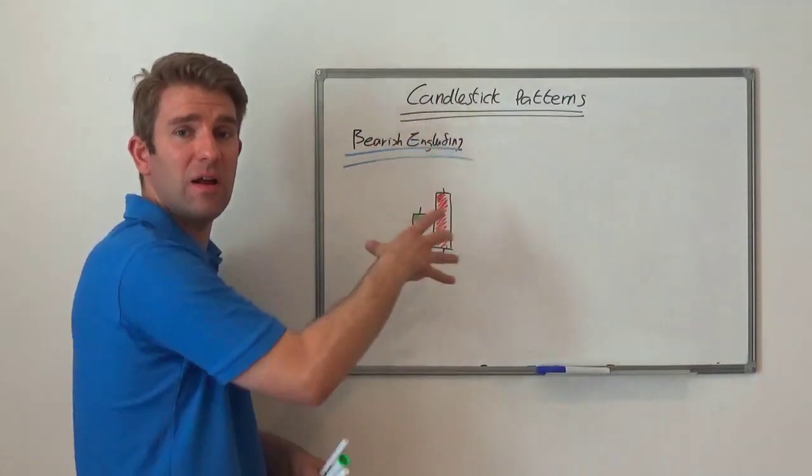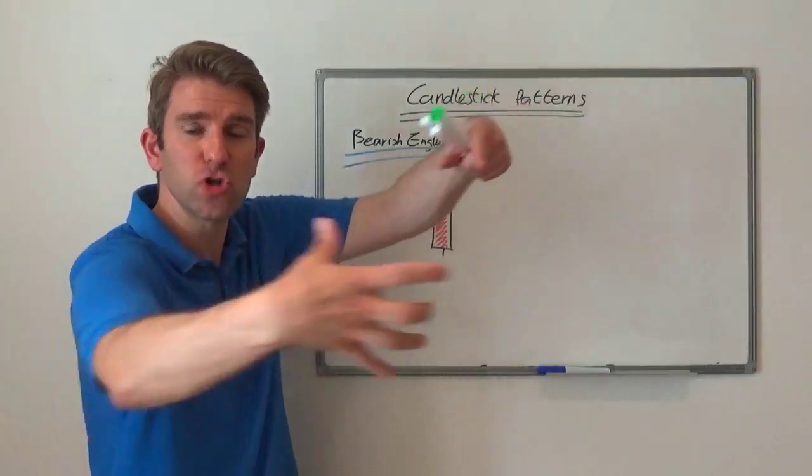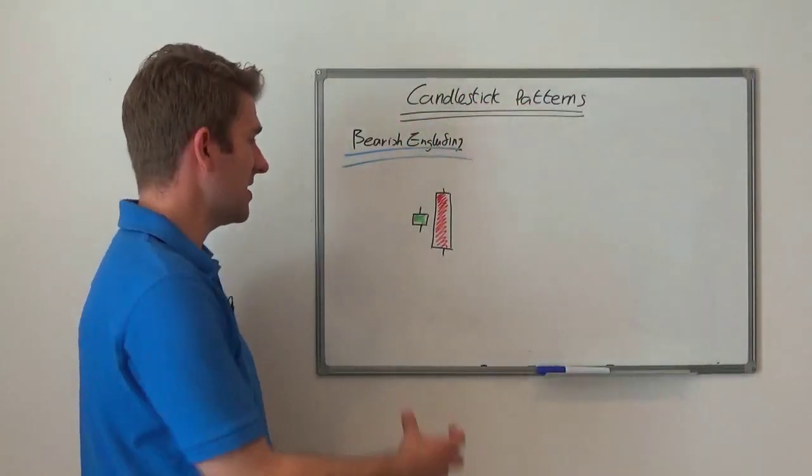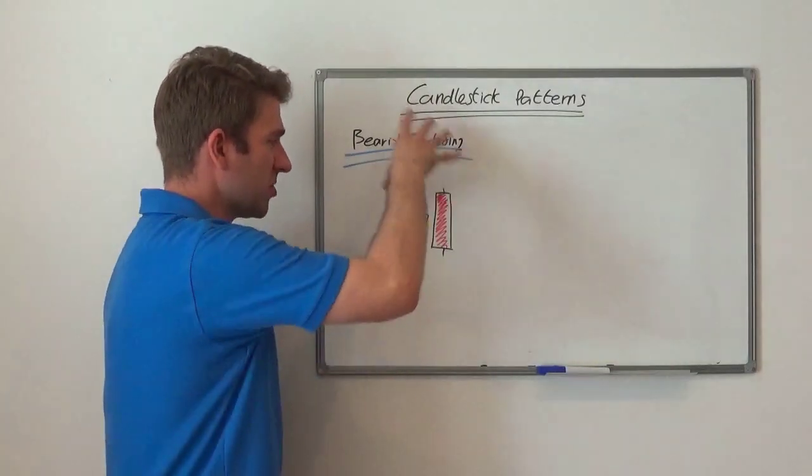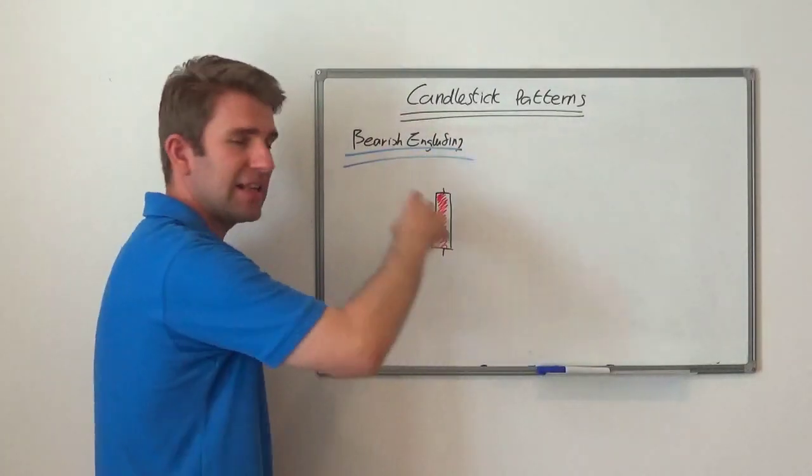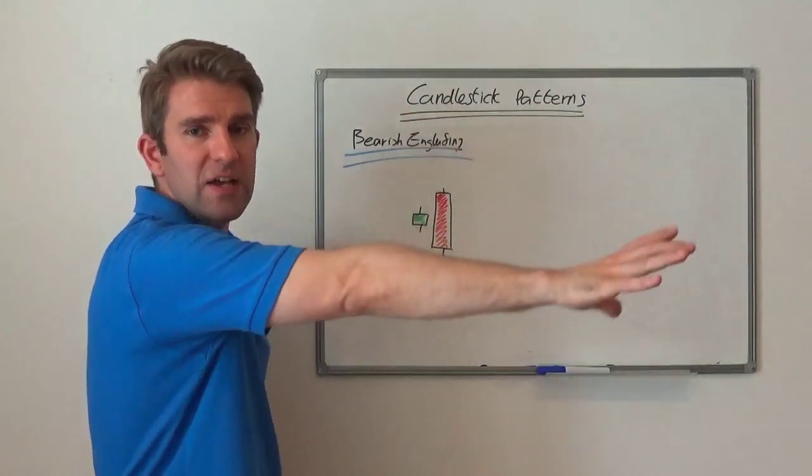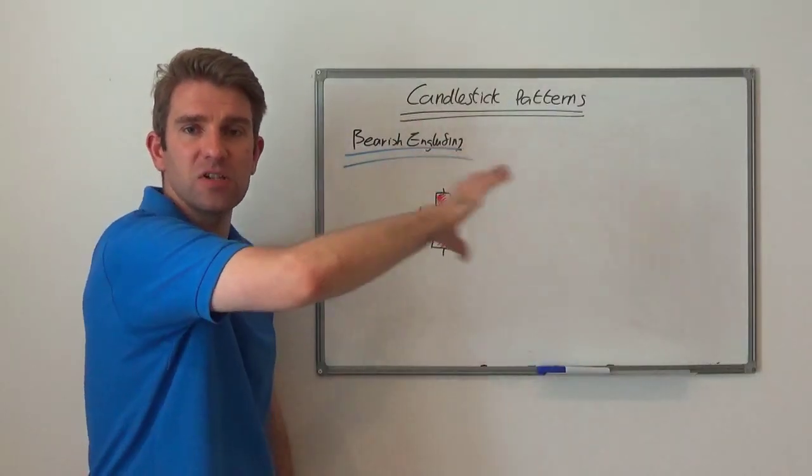In other words, the high is higher than the high, the low is lower than the low. It's just swallowing it up. It's basically saying, listen, we tried to go higher, we couldn't go higher. Not only that, sellers have come in, got aggressive, taking it down through the low. We've done all of yesterday's range, volume is there, supply is coming in. Get out the way, the bears are in control.